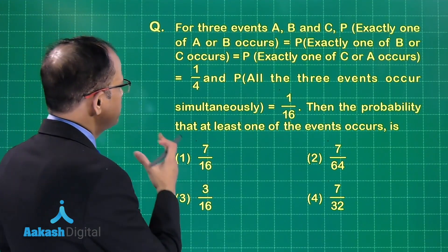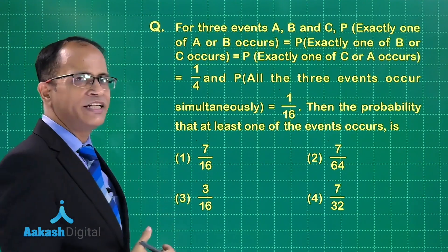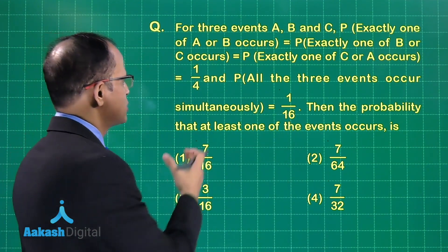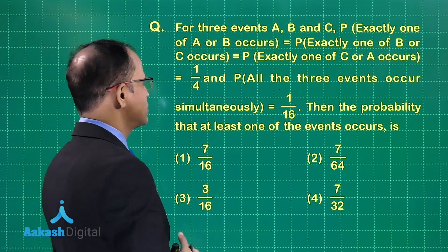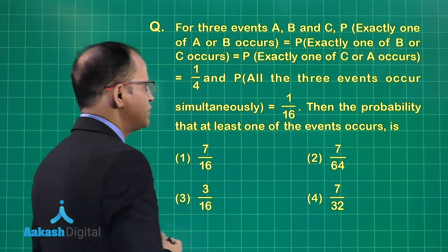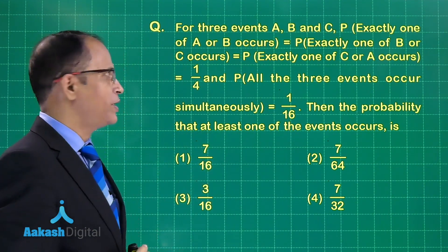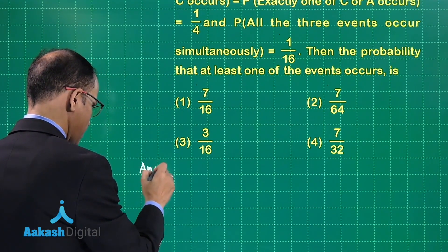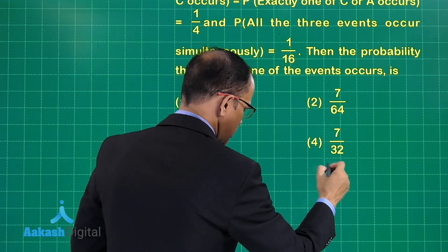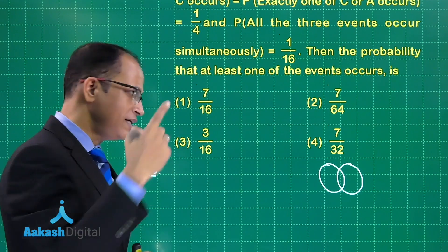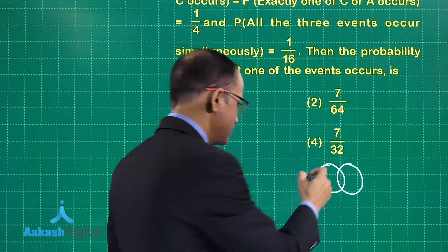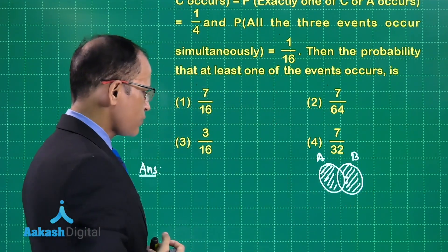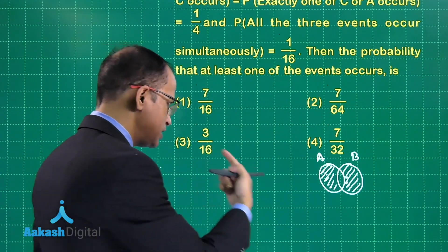Now the third problem: we have three events A, B, and C where the probability of exactly one of A or B occurring equals the probability of exactly one of B or C occurring, equals the probability of exactly one of C or A occurring, all equal to 1/4. The probability of all three events occurring simultaneously is 1/16. To understand this, recall that 'exactly one of A or B' corresponds to the region of A not in B, plus the region of B not in A.